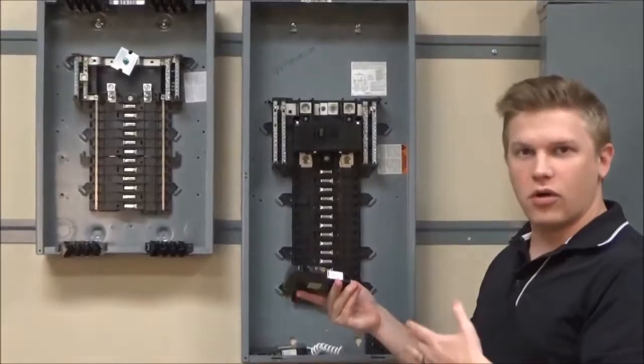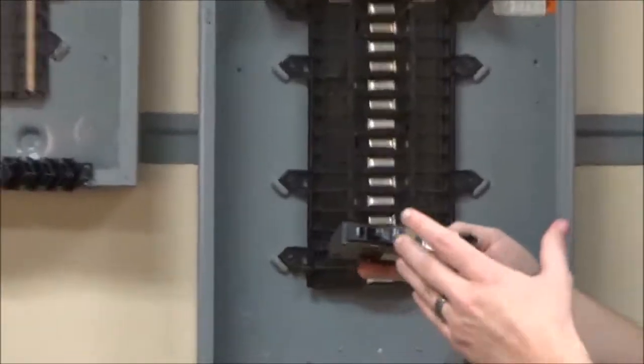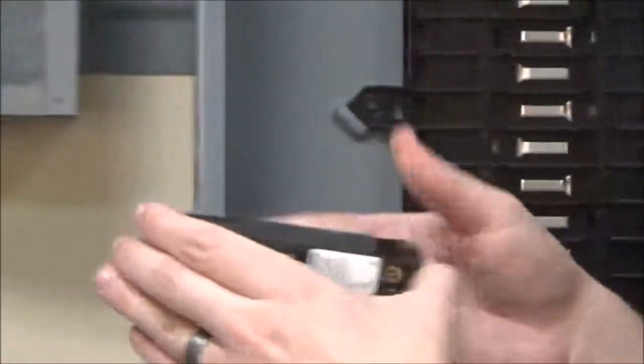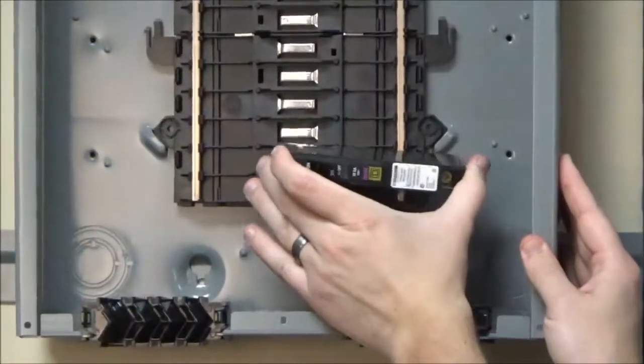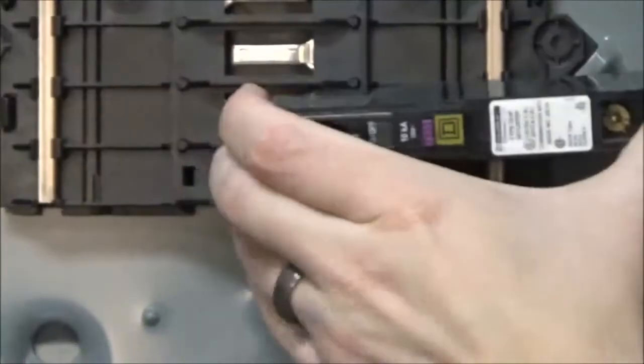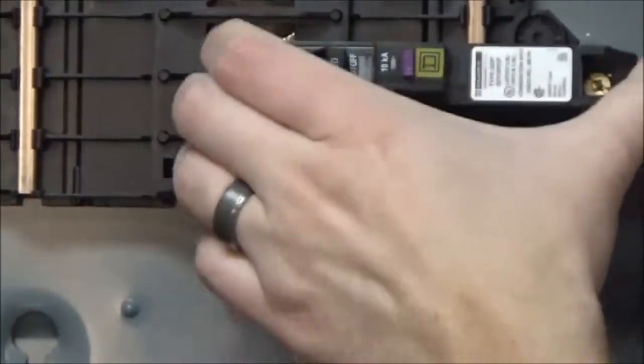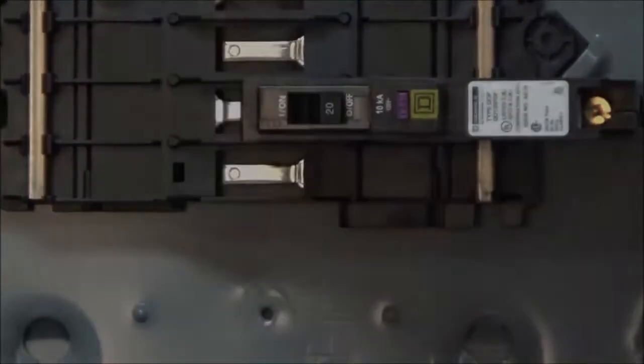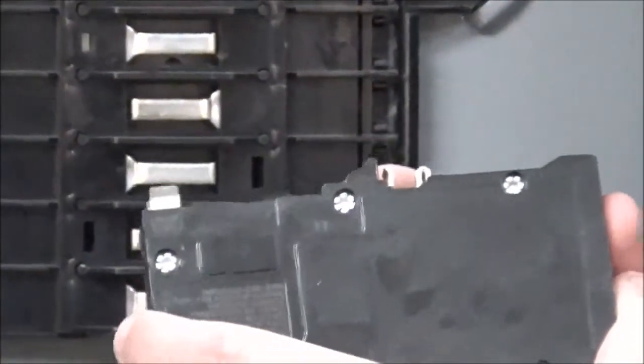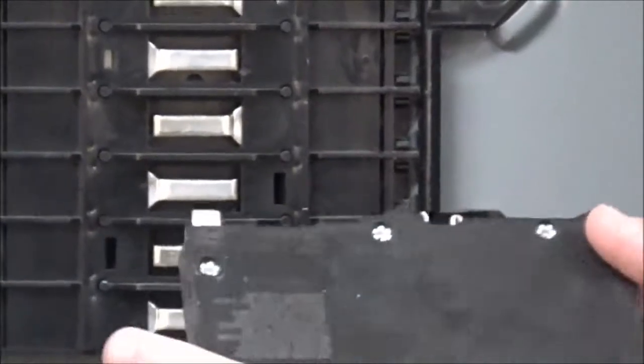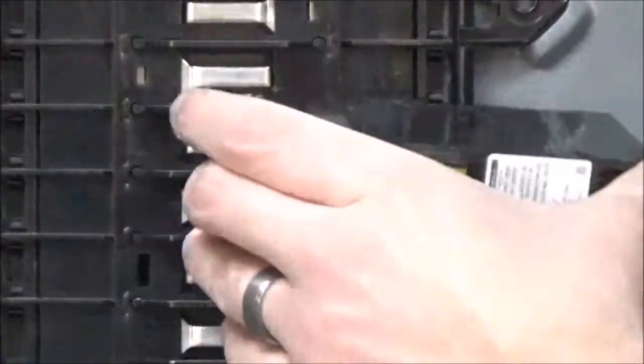The plug-on neutral arc fault breakers and dual function breakers will install on the plug-on neutral panel in a similar fashion. However, there is a rejection feature here that prevents the breaker from being able to be installed in a standard QO panel.